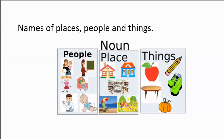Nouns are names of places, people and things, such as teacher, Sarah, a house, beach, apple, table, and pencil.